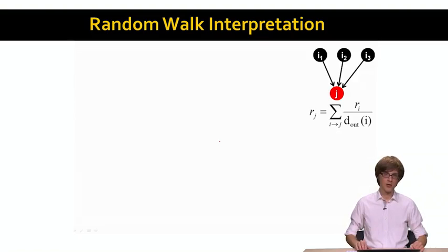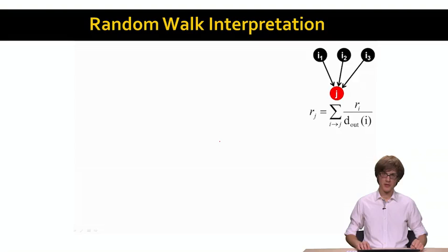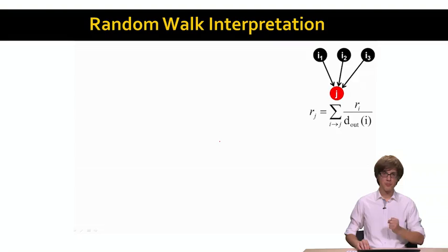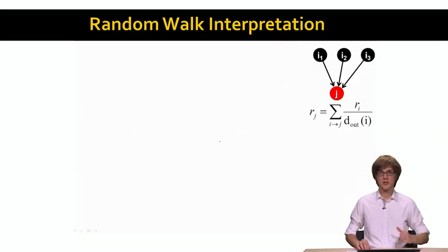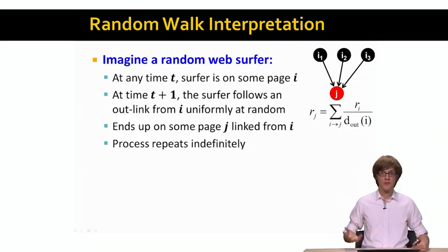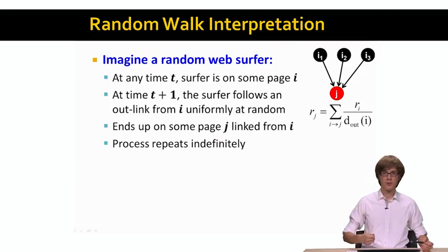Here is a way to think about this. We think about the web graph as a giant graph, and we think about a surfer — a person who is randomly surfing this graph. A surfer comes to a given web page, looks at all of the outgoing links, picks one at random, and moves to the next web page, browsing this graph indefinitely. At some given time t, a surfer is at some node i, and at the next time step t plus 1, the surfer will follow an outlink from i, chosen uniformly at random out of all outlinks of node i.